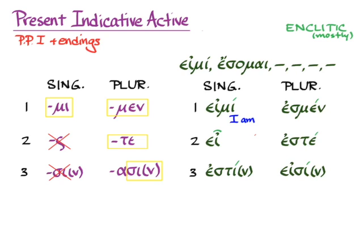So, we get εἰμί, I am; εἶ, you are; ἐστίν, or ἐστί, she is, or he is, or it is; ἐσμέν, we are; ἐστέ, y'all are; and εἰσί, or εἰσίν, they are.